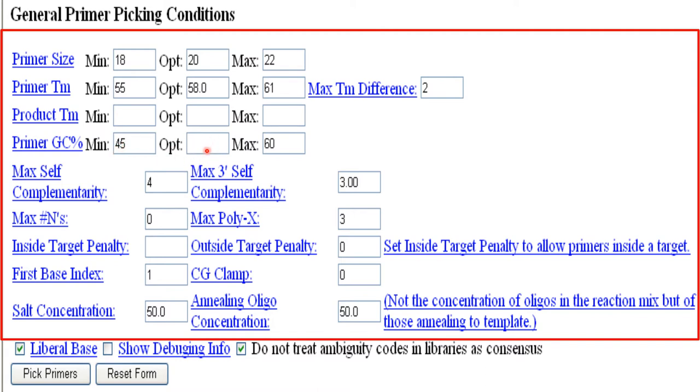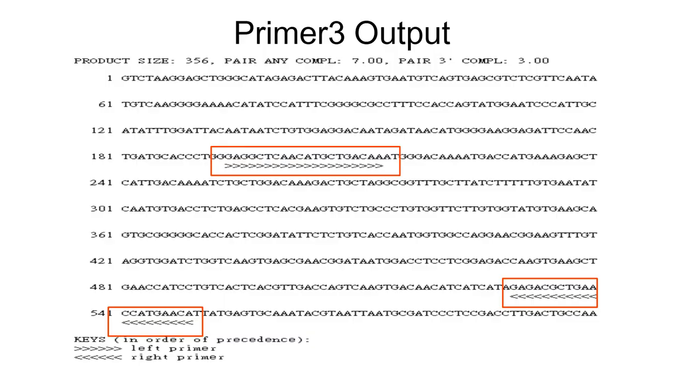Here they have mentioned like 75, optimum it will take like 50 percent only. Then salt concentration also we have to mention like 50 percent, first base index is one, and maximum self-complementarity, GC clamp, oligo annealing, oligo concentration will be 50 percent. So after filling up these things, the software will show the left primer and right primer.